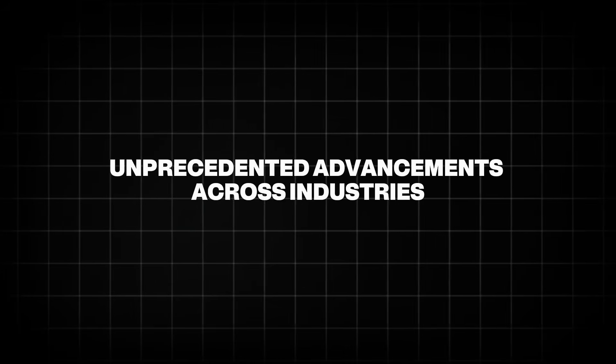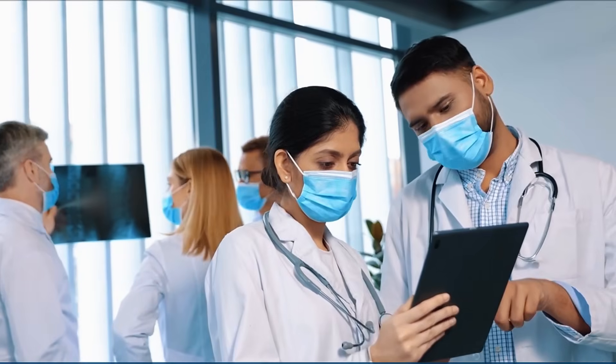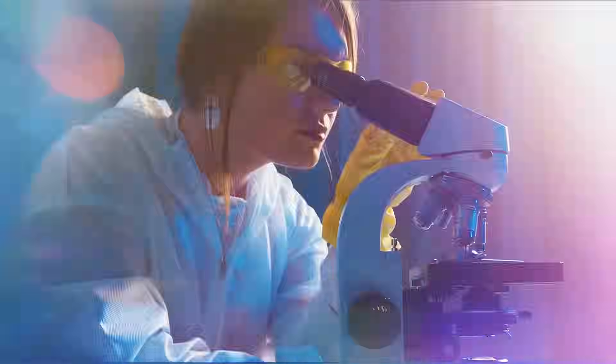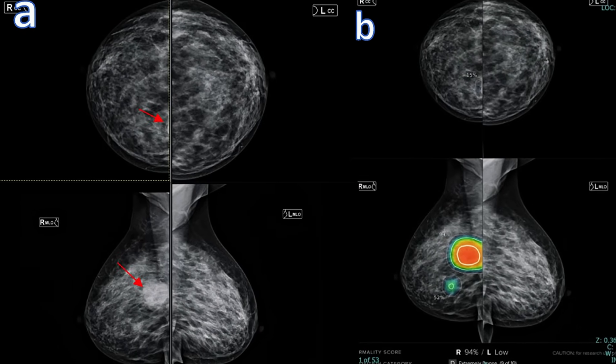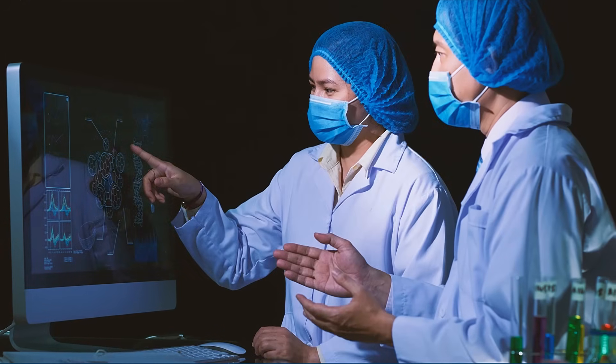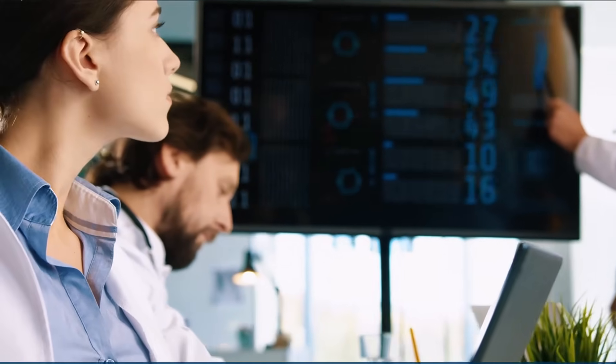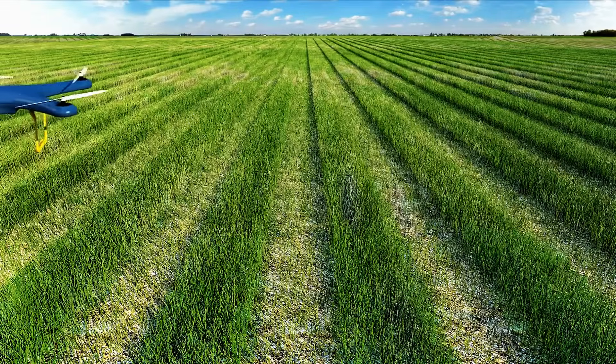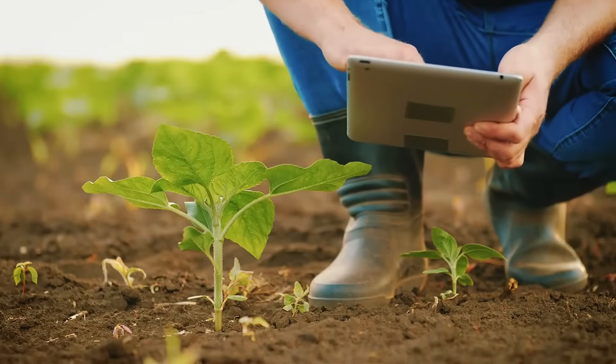Unprecedented advancements across industries. AI's impact is staggering. In healthcare, AI algorithms now diagnose diseases with accuracy rivaling or surpassing human doctors. A 2019 study in The Lancet found that AI systems could detect breast cancer from mammograms with 94.5% accuracy, compared to 88.4% for radiologists. In agriculture, AI-driven precision farming has boosted crop yields by up to 20%, according to the Food and Agriculture Organization, optimizing water and fertilizer use in regions plagued by scarcity.